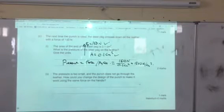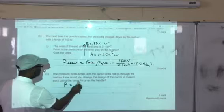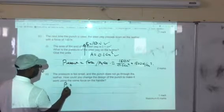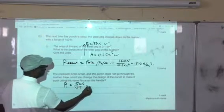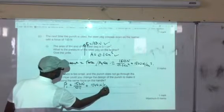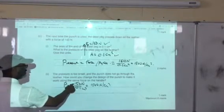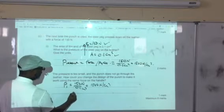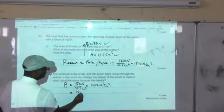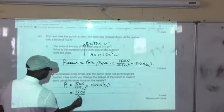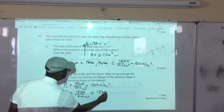If we want to change the pressure and keep the force the same, then what we can do is, for example, if the first pressure is 150 newtons over 0.1, that gave us 1500 newtons per centimeter squared. To increase the pressure without changing this force, we reduce the area. So we can reduce the area to 0.05 or 0.01 centimeters squared, which will give us 15,000 newtons per centimeter squared, a higher pressure.